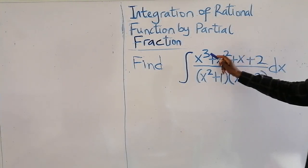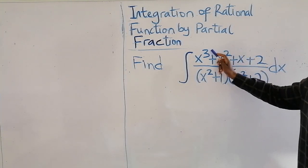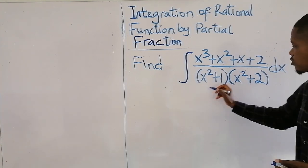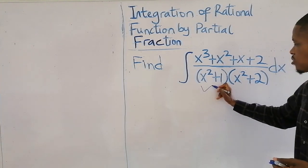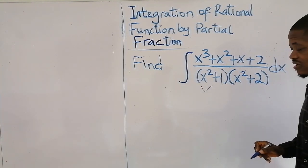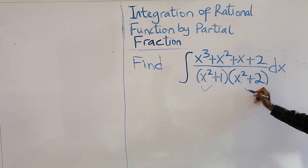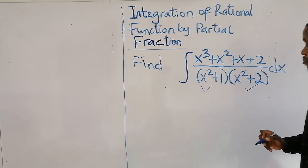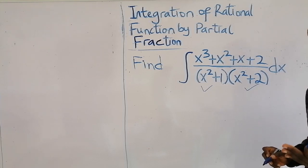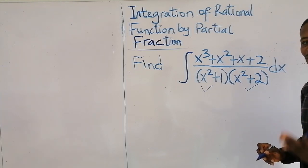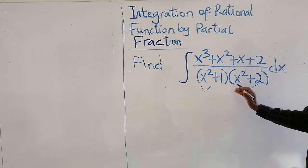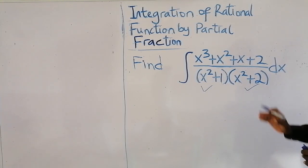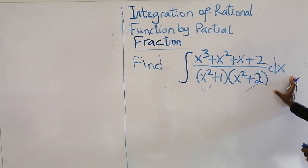Observation 1 is that the numerator power is less than the denominator. Observation 2: this first expression is quadratic and we cannot factorize it. This one is also quadratic and we cannot factorize it, making it two products of irreducible quadratic factors. So we are having two irreducible quadratic factors in the denominator.